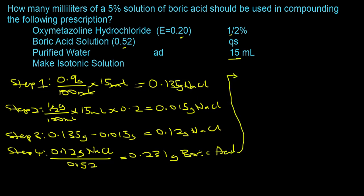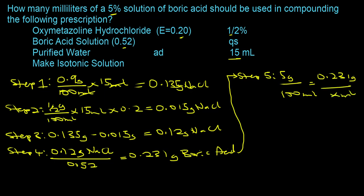In step five, you set up a proportion using the five percent solution. So you have 5 grams in 100 milliliters equal to 0.231 grams over some volume x in milliliters. Solving for x: x equals 100 milliliters times 0.231 grams divided by 5 grams. Grams cancel out, and that equals 4.62 milliliters.